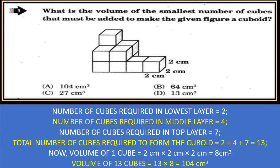What is the volume of the smallest number of cubes that must be added to make the given figure a cuboid? We want to calculate how many cubes are required. Number of cubes required in the lowest layer is 2, in the middle layer is 4, and in the top layer is 7. Total number of cubes required to form the cuboid is 2 plus 4 plus 7, which equals 13.